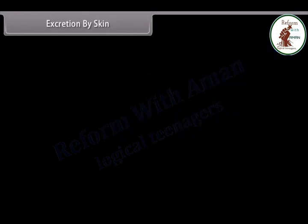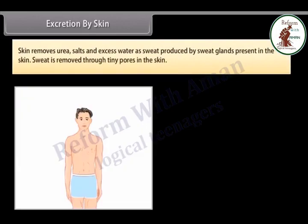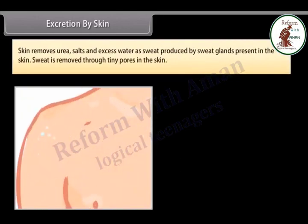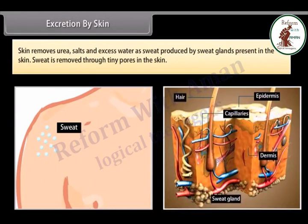Excretion by skin: the skin removes urea, salts, and excess water as sweat produced by sweat glands present in the skin. Sweat is removed through tiny pores in the skin.